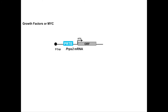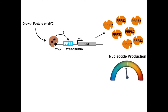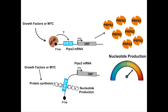Mechanistically, MYC or growth factor stimulation acts on the key regulated step of translation initiation through the protein EIF4E, which binds the 5' cap of mRNAs. Through a mechanism we still don't fully understand, the PRTE confers sensitivity to EIF4E and allows an acute response of PRPS2 translation upon growth factor stimulation. This allows nucleotides to be produced in an acute manner just through the action of a single enzyme, PRPS2. Therefore, we find that the PRTE provides a mechanistic link between protein synthesis and nucleotide metabolism.